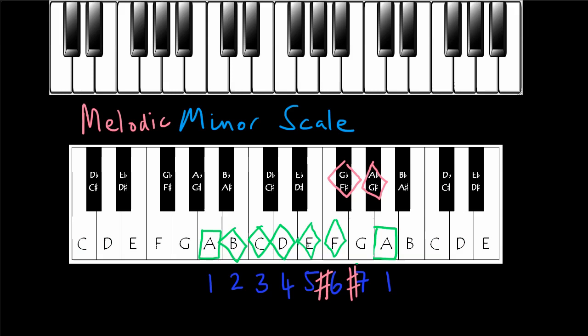So on the way up, the scale is going to go A, B, C, D, E, F sharp, G sharp, A.